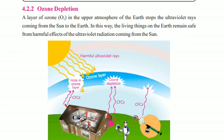A layer of ozone, with the formula O₃, in the upper atmosphere of the earth stops the ultraviolet rays coming from the sun. In this way, living things on the earth remain safe from the harmful effects of ultraviolet radiation.